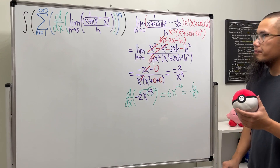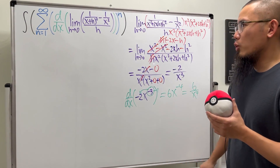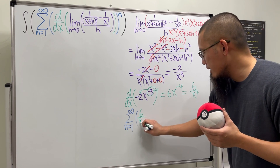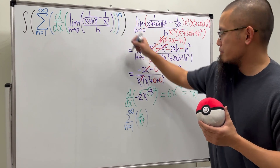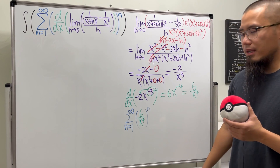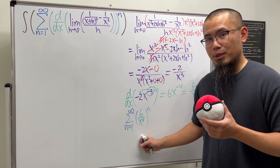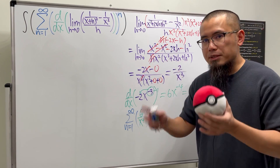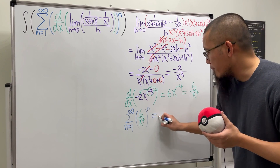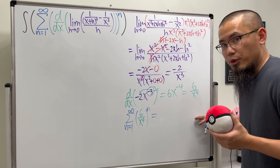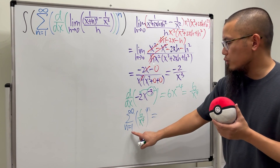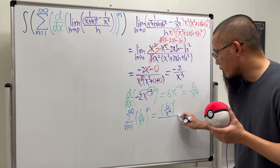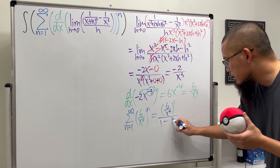Next, infinite series. We have the infinite series as n goes from 1 to infinity of 6 over x to the fourth power, raised to the nth power. This is actually a geometric series. For it to converge, the absolute value of the inside must be less than 1. Assuming it converges, it converges to the first term (when n equals 1) — that's 6 over x to the fourth — divided by 1 minus the common ratio, which is 6 over x to the fourth.